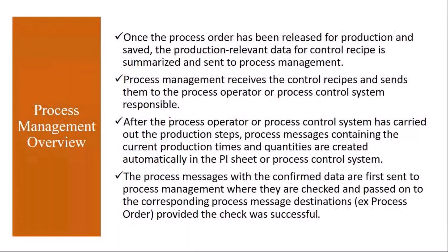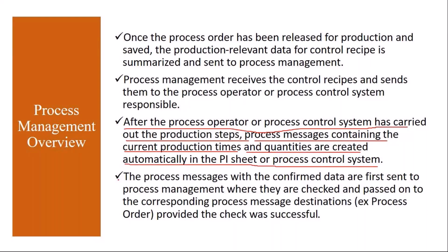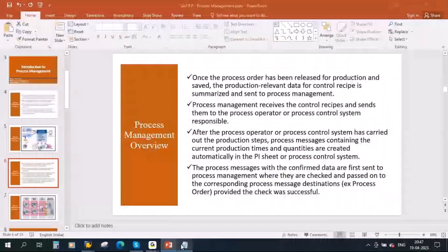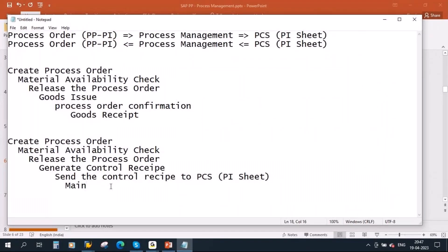After the process operator or process control system has carried out the production steps, the process messages containing the current production types and quantities are created automatically in the PI sheet or process control system. On the PI sheet, the production operators enter the actual production data — raw materials consumed, production timings, and the quantity of finished product produced. This step is called maintaining the PI sheet.